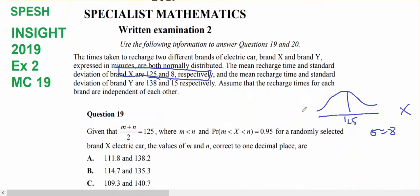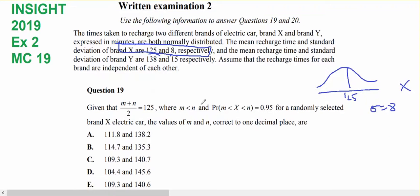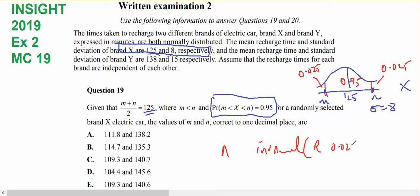In question 19 I'm told that the probability of x going between m and n is 0.95, and that m plus n divided by 2 is 125, which is my mean. So n is the larger, m is the smaller, and I'm going to call this n here is 0.95, therefore that's 0.025 and that's 0.025.